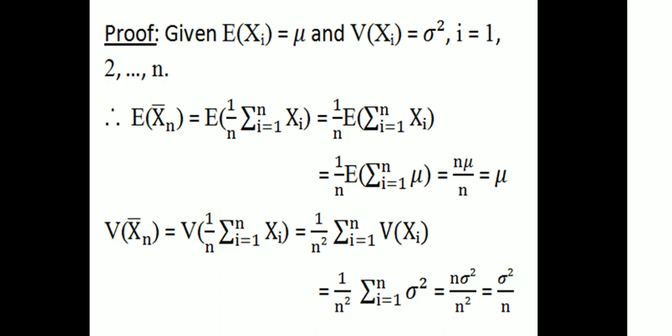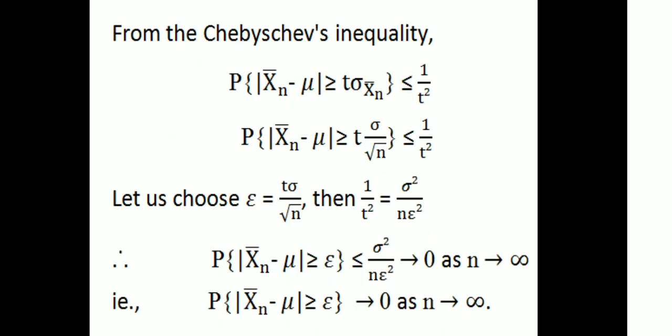So expectation of Xn bar is equal to mu and variance of Xn bar is equal to sigma squared by N. Then from Chebyshev's inequality, the probability of |Xn bar minus mu| greater than or equal to t times sigma(Xn bar) is less than or equal to 1/t squared.